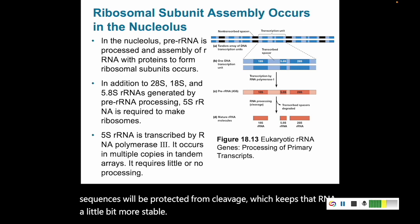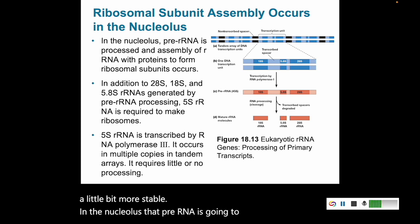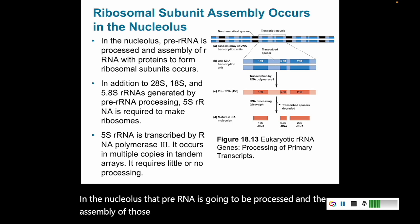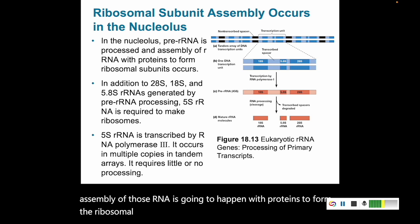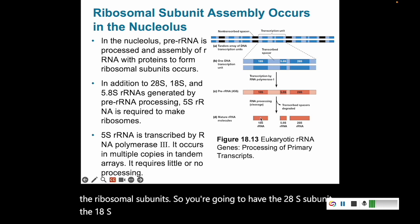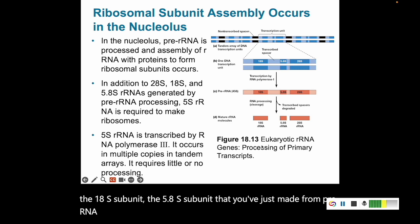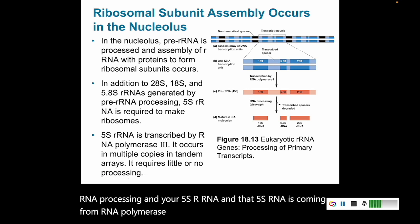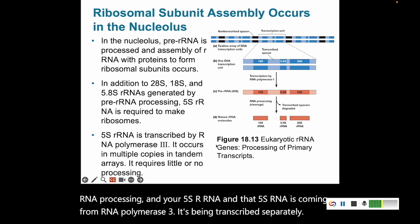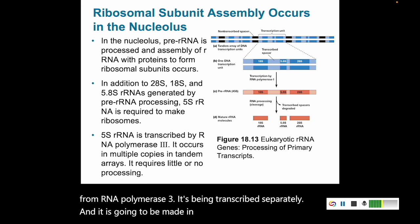In the nucleolus, that pre-rRNA is processed and the RNA molecules are assembled with proteins to form the ribosomal subunits — the 28S, 18S, and 5.8S subunits from pre-rRNA processing, plus your 5S rRNA. The 5S rRNA comes from RNA polymerase III and is transcribed separately. It is made in multiple copies and does not require extensive processing like the others.